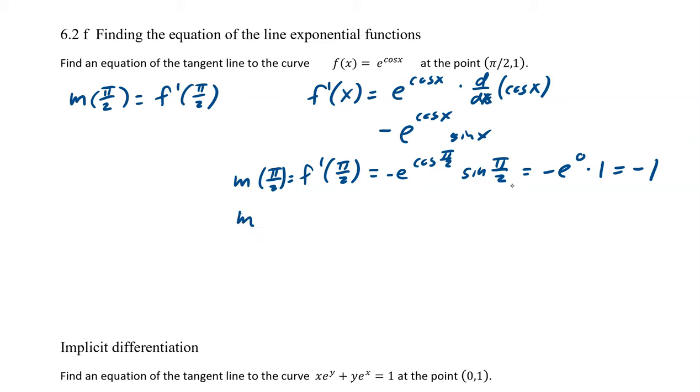So we already know the point. If we take our slope, which is negative 1, and our point, π/2 comma 1, we get our equation. So this is y minus 1 equals negative 1, x minus π/2.